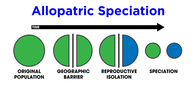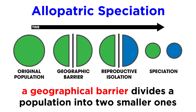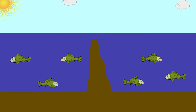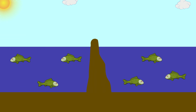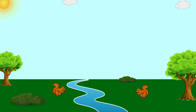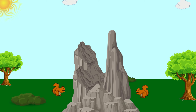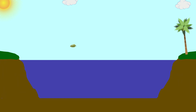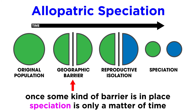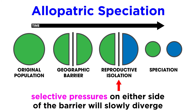Allopatric speciation is the easiest to understand. This occurs when a geographical barrier divides a population into two smaller populations. This could occur if the water level in a lake decreases such that some land mass divides it into smaller bodies of water. A river may change course and divide a population. A mountain range or a canyon may slowly form. Seeds from a plant may float across a body of water and land on an island. Once the barrier is in place, speciation is only a matter of time, as mutations continue to occur, and selective pressures on either side of the barrier must necessarily slowly diverge.